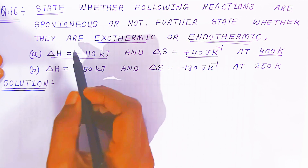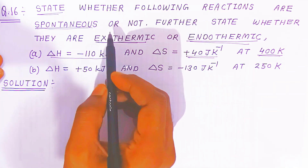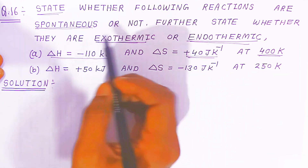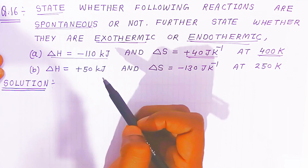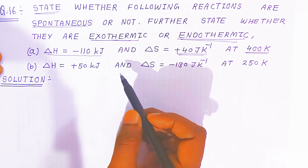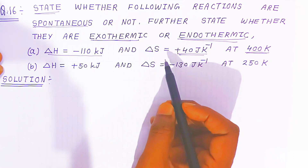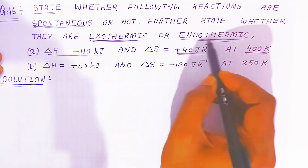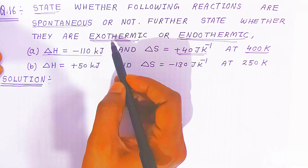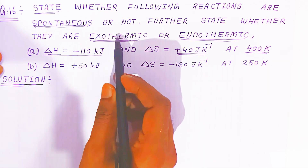With the help of these data, you have to state whether the following reactions are spontaneous or not. If it is spontaneous, you have to write spontaneous; if it is not spontaneous, you have to write non-spontaneous reaction. So, how you come to know? With the help of the Gibbs change energy — if the change in Gibbs energy is negative, we are saying the reaction is spontaneous.